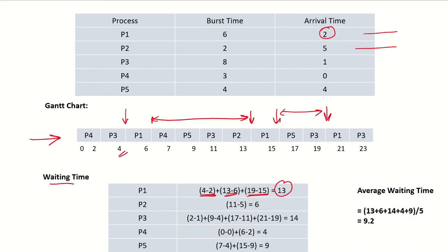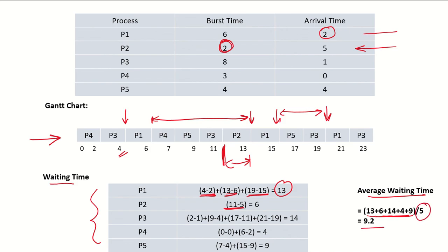P2 arrived in the system at time five and got the processor at time eleven, giving a wait time of six. P2 completed its burst time in that single execution phase. Similarly, we compute the wait times for all other processes, and the average waiting time — total waiting times divided by five processes — is 9.2.